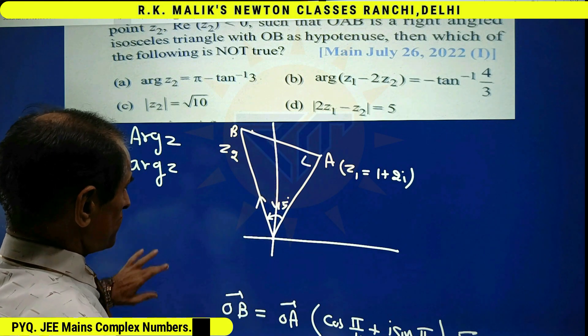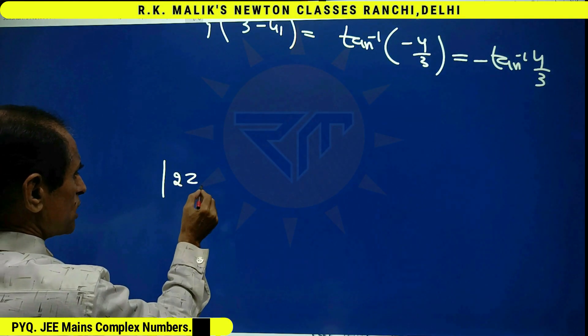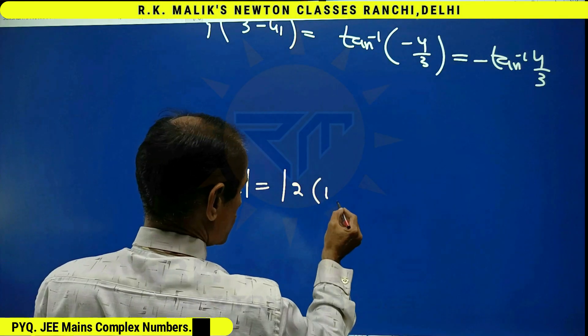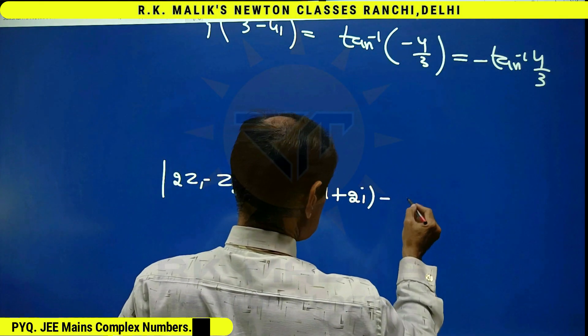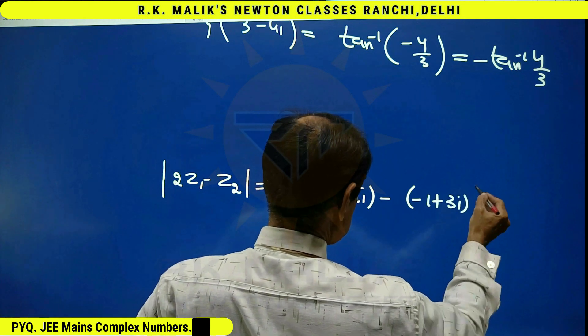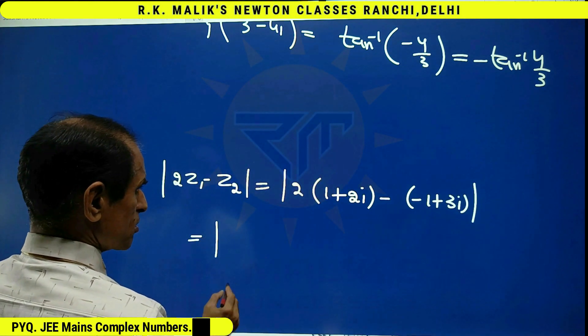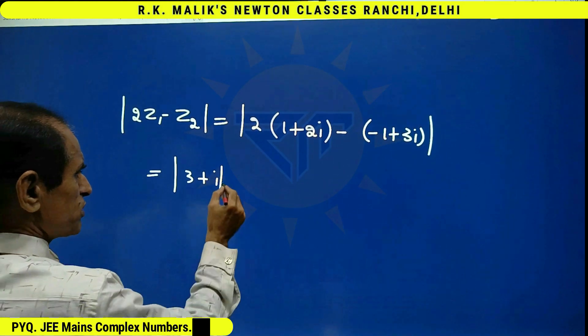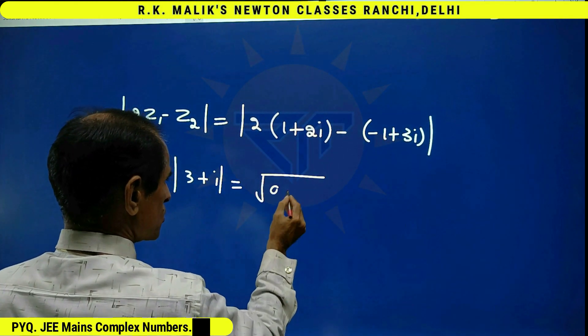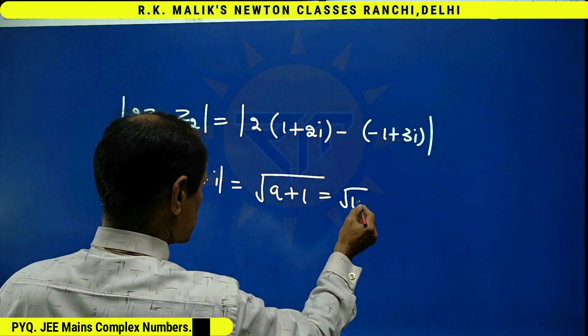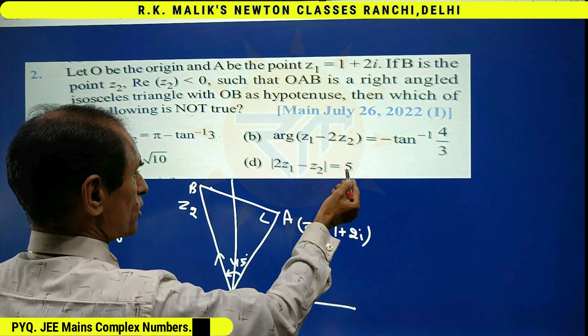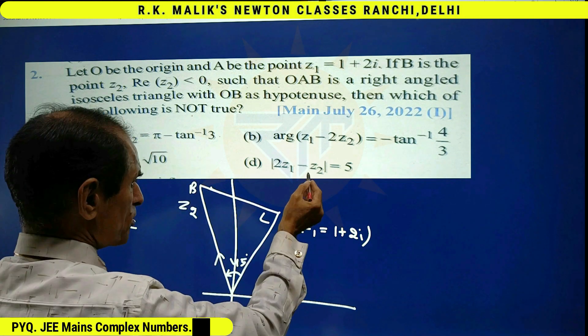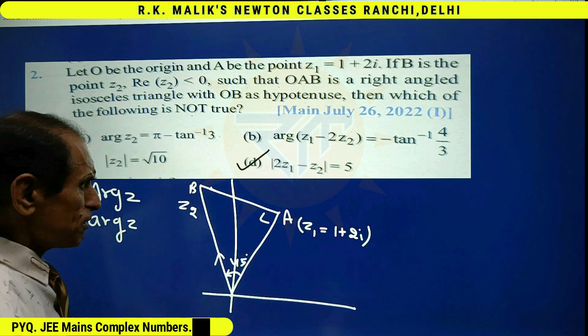And to check choice D, 2z1 minus z2 means 2 times (1 plus 2i) minus (-1 plus 3i), which is equal to under root, 9 plus 1 is equal to root 10. Hence, I can say the information of choice D is wrong. And because he wants the choice which is not true, because this information is wrong, hence D becomes the correct choice.